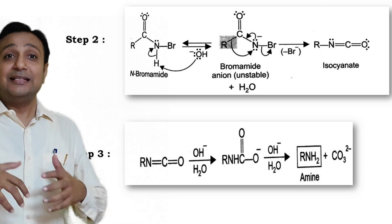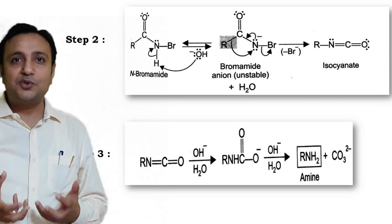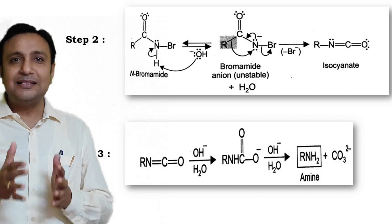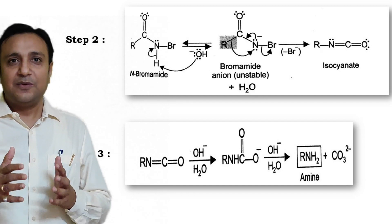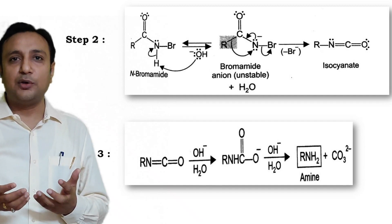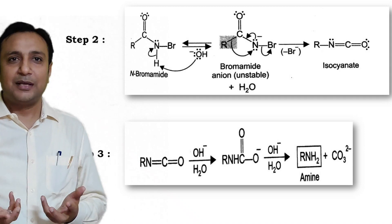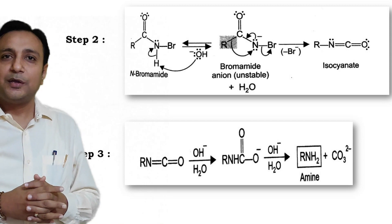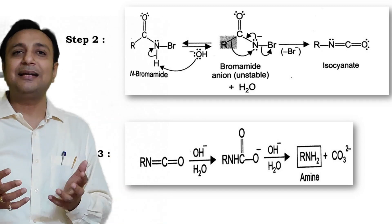In Step 3, the isocyanate undergoes rapid hydration to form an unstable carbamic acid, which loses a CO2 molecule to give the amine. This step is shown on your screen. This is the detailed mechanism of the Hoffmann reaction.